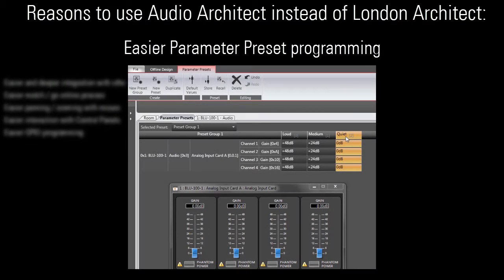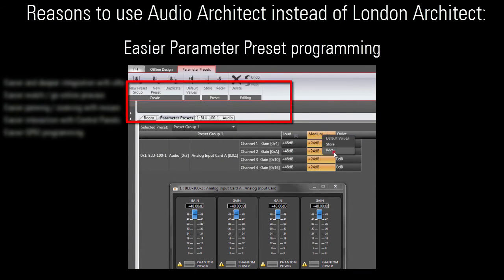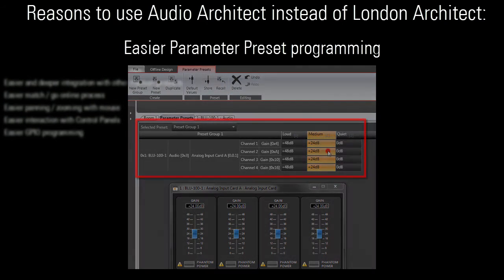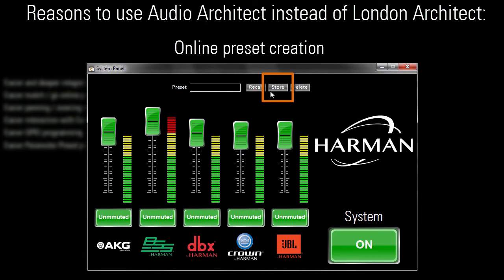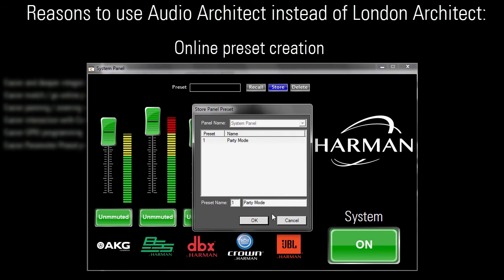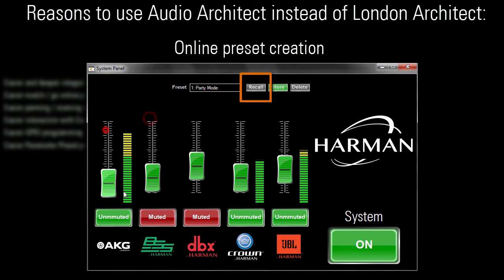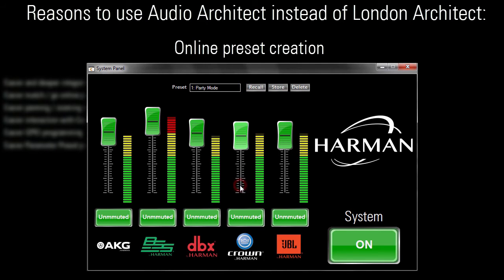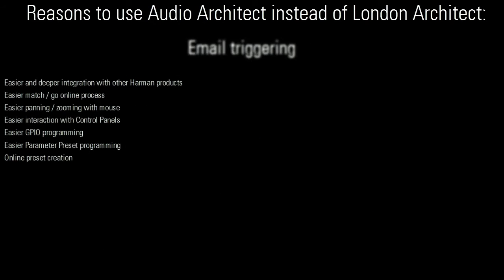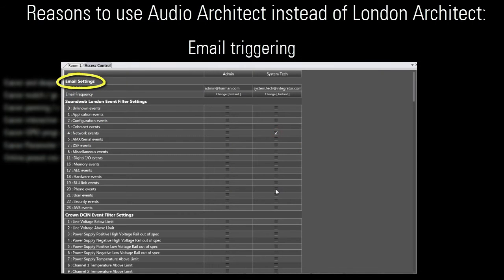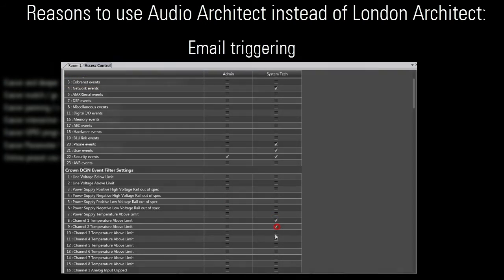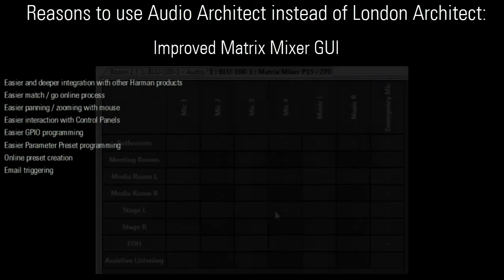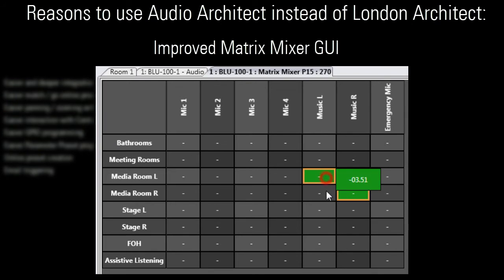It's also easier to create and manage parameter presets with clearly labeled buttons and a much more informative layout. There are now ways to create presets while online. You can now set up email triggering, so if something good or bad happens in the system, you can receive an email about it. The matrix mixer GUI is now both easier to use and a bit more attractive by default.